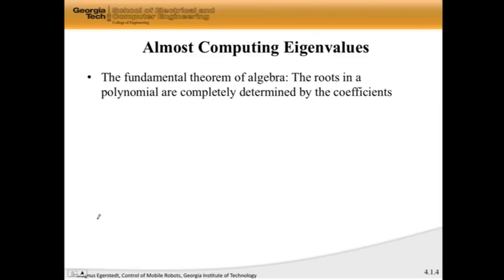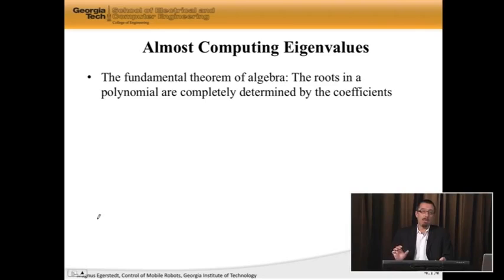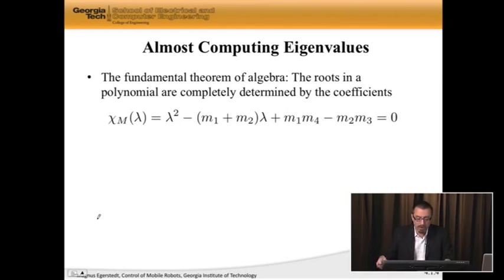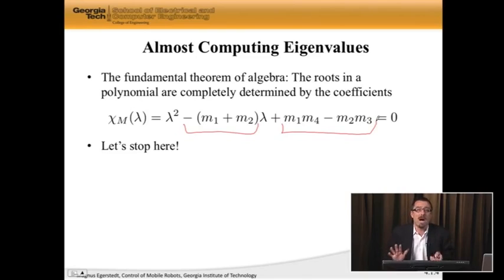Turns out the answer is yes. There is something called the fundamental theorem of algebra. And this fancy sounding theorem says that if I have a polynomial, the roots to that polynomial are determined by the coefficients, which means that I actually don't have to solve this equation. Here I have coefficients in front of lambda, and here I have the coefficients that aren't in front of any lambda. Those coefficients alone are enough to implicitly but completely determine the eigenvalues. So we're not going to solve this. We're just going to stop here and say, fine, let's start massaging the coefficients directly.